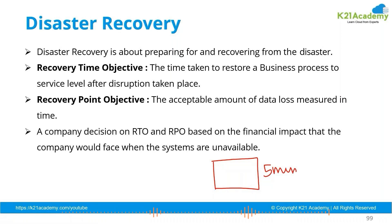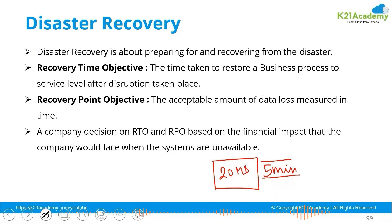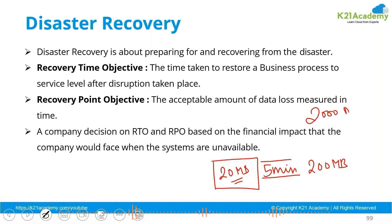Consider the cost of that data. For example, one customer generates 20 MB of data every five minutes, another generates 200 MB in five minutes, and another generates 2000 MB in five minutes. So you cannot keep the RTO or RPO the same for all of them — the lesser the RTOs and RPOs you want, the stronger the resiliency and recovery procedures required.